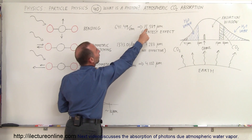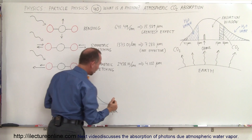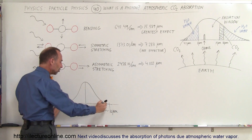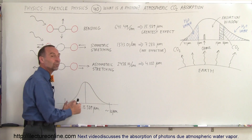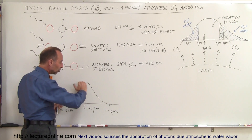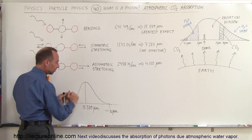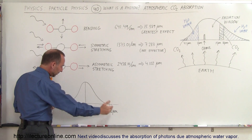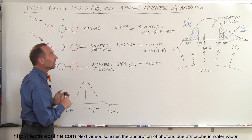The bending vibration occurs at a wavelength of 15.589 micrometers, but it absorbs energy somewhere between 15 and 16 micrometers in wavelength. Of course it's most effective at that particular frequency, but it tapers off over a range of about one micrometer.